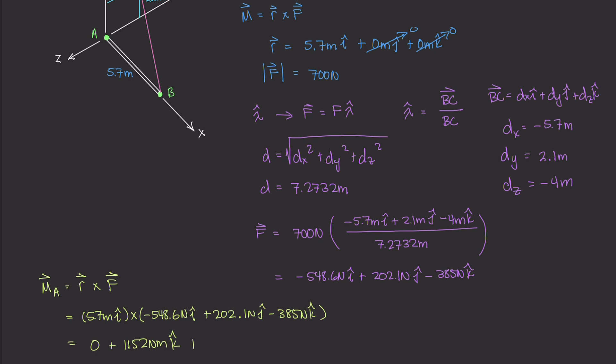Finally, the last term, so plus this 5.7 times negative 385. We have a positive number here times a negative number here, so that's going to be negative. But because we're doing i cross k, we're going to get j. But because it's i cross k and not k cross i, we're going to get a negative j. So even though 5.7 and negative 385 is negative, we have negatives that cancel out because i cross k is also negative j. So plus 2194 newton meters in the j direction.